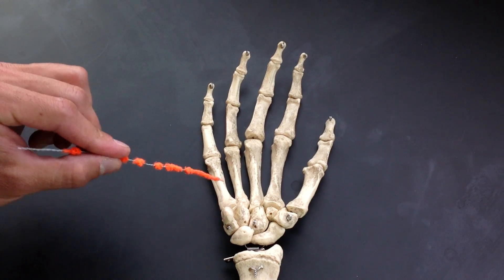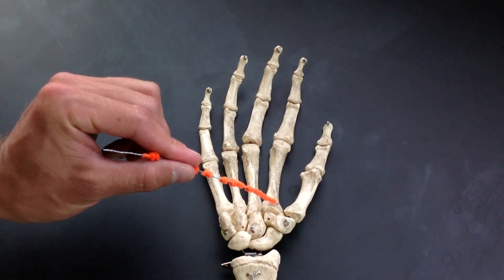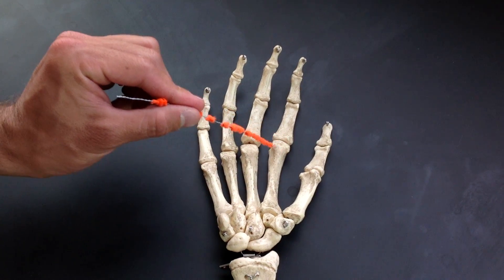Which is the fifth metacarpal. On each metacarpal, you have a base, which is proximal, and a head, which is distal.